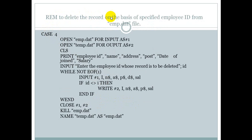For Case 4, we delete records on the basis of the specified employee ID from emp.dat file. We open two files: the original emp.dat in input mode as file number one, and a temporary file (temp.dat) in output mode as file number two. Then we input the employee ID whose record is to be deleted into variable id. While not EOF, we read all the content.